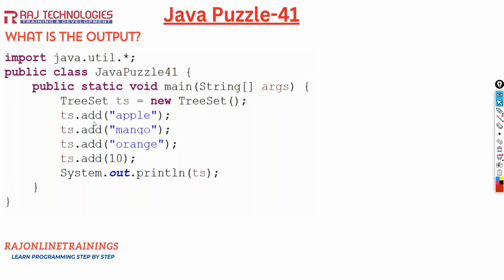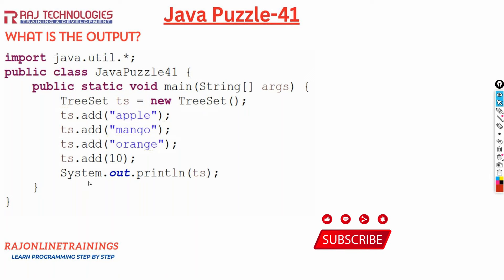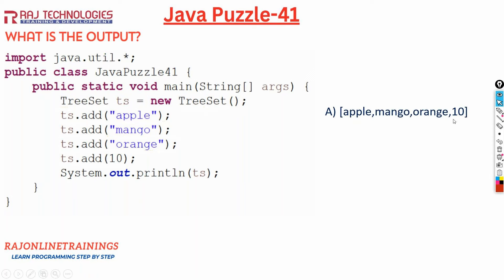To this TreeSet we are adding elements like ts.add('apple'), ts.add('mango'), ts.add('orange'), and ts.add(10). We are printing the value of ts. Now let us see the options for this puzzle. Option A: it's going to display the elements like apple, mango, orange, and 10 — that is, ordered the way we added them.